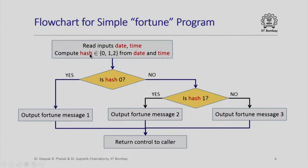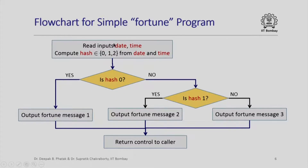Once I have computed this hash value, I can check whether the value of hash is 0. If yes, I print out the first Fortune message. If no, I check whether the value of hash is 1. If so, I print out the second Fortune message. If the value of hash is neither 0 nor 1, I print out the third Fortune message, and in all cases after printing the message I return control back to the caller. Here is a simple animation: if the value of hash is 1, control flows down to print Fortune message 2 and then returns to the caller.